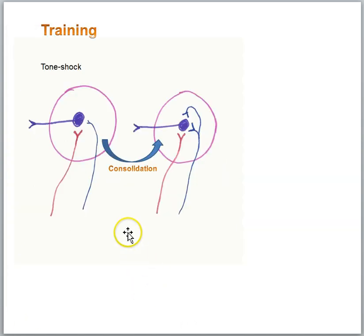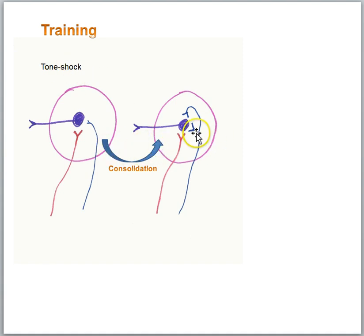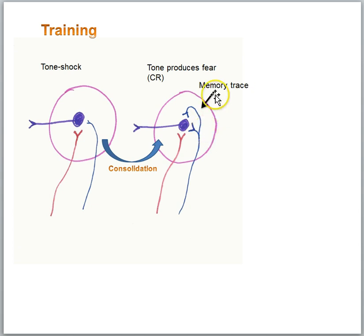Let's look at this again using some of our other vocabulary. We have an amygdala neuron, and activation of this neuron sends information down to the fear regions of the brain, and then the animal shows fear. Initially the shock pathway has a strong synapse — shock alone generates fear. The tone pathway is weak — tone alone does not activate the target cell, so no fear to the tone initially. When we train with tone-shock pairings, we get plasticity: the growth of new synapses in the tone pathway. We can call this memory consolidation — the brain is changing as a result of learning, and this physical change is the memory trace. The growth of the new synapses is the memory trace, and now the tone alone produces the fear — that's the conditioned response.